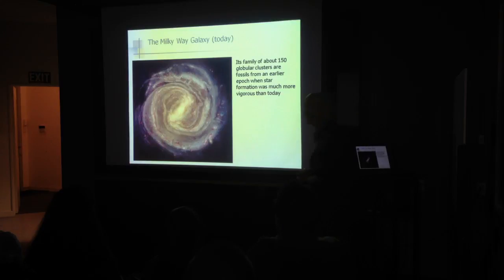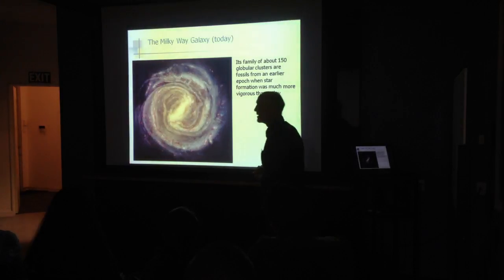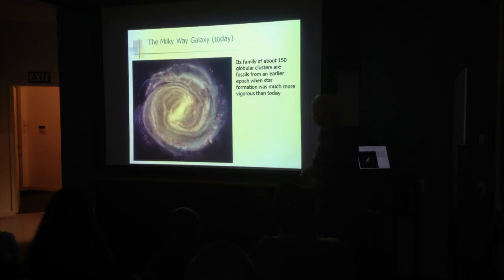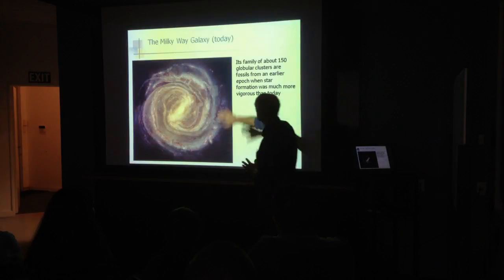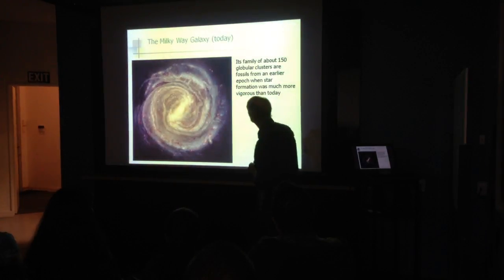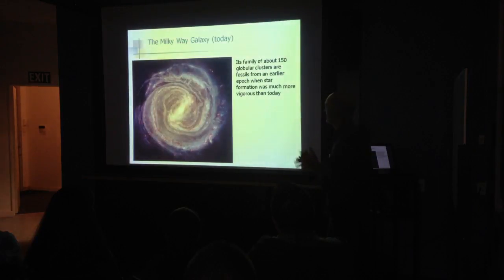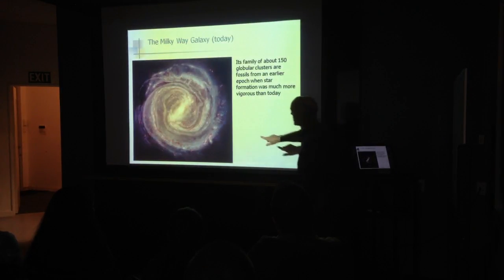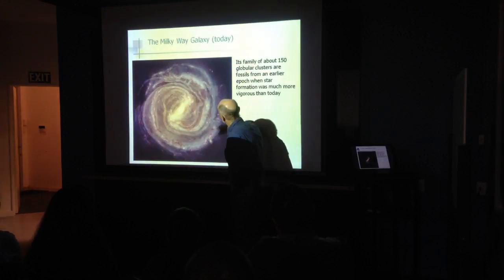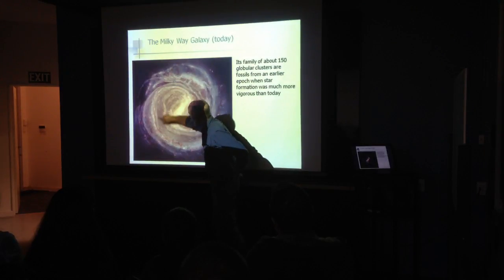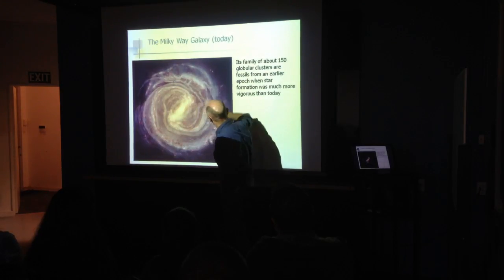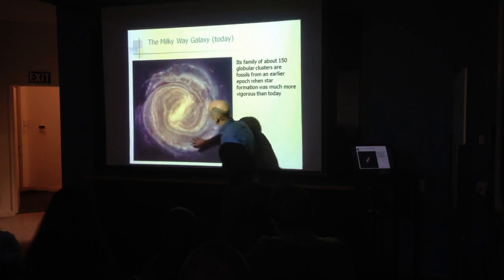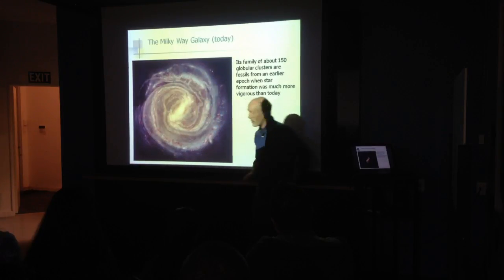It was actually done by radio astronomers who mapped the hydrogen of the galaxy. It shows that in our galaxy today, stars are forming — these are star-forming regions where all the bright stuff is, around the spiral arms.